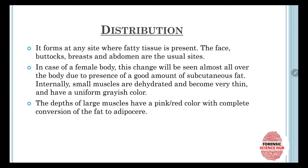Regarding distribution, adipocere forms at any site where fatty tissue is present, including the face, buttocks, breasts, and abdomen. In female bodies, this change is seen almost all over the body due to the greater amount of subcutaneous fat. Internally, small muscles are dehydrated and become very thin with a uniform grayish color, while the depths of large muscles show a pink to red color with complete conversion of fat to adipocere.